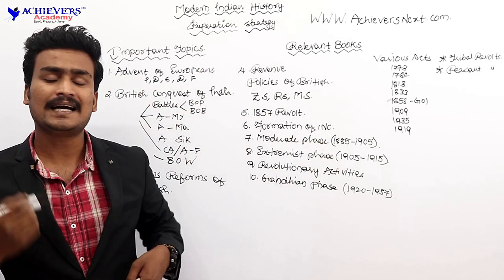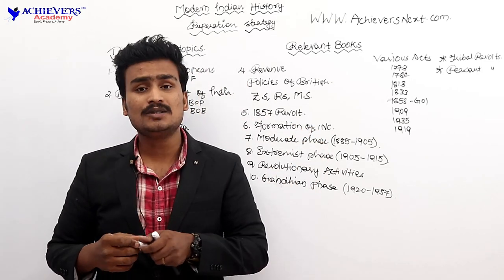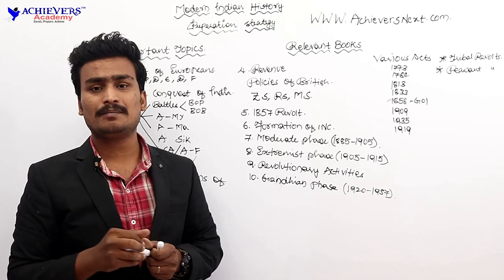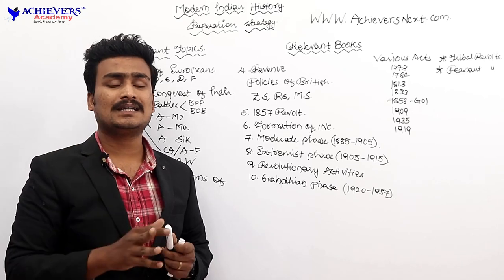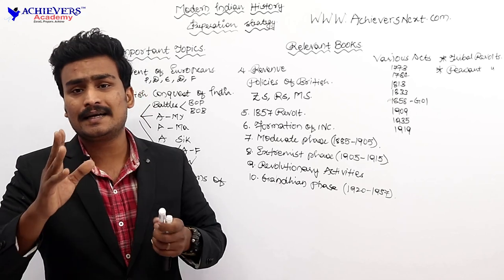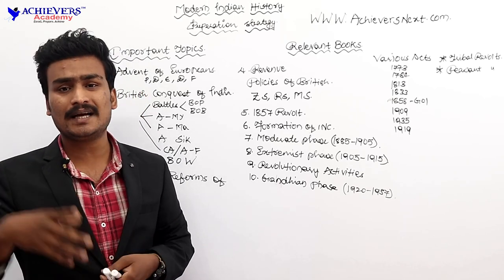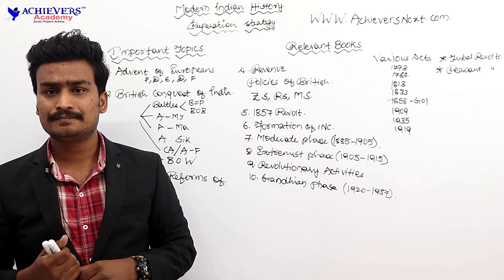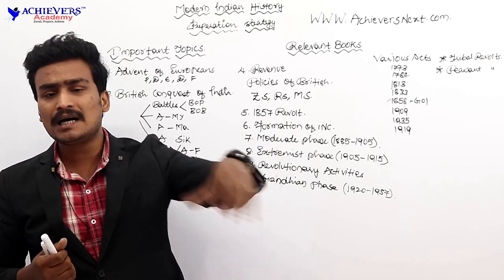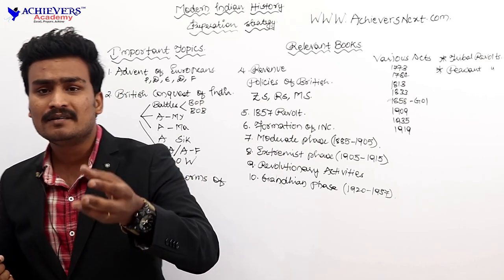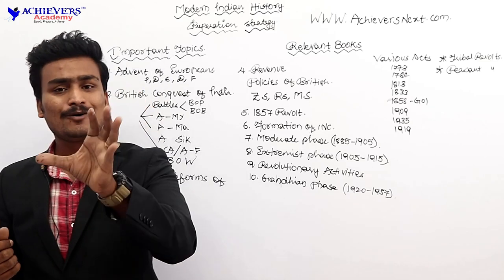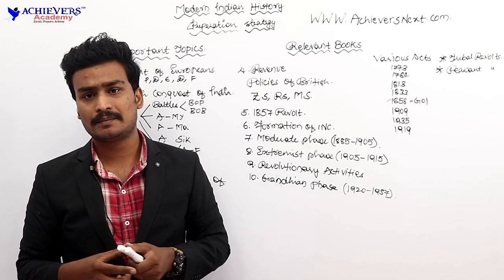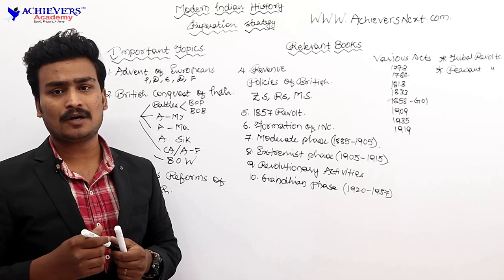After tribal revolts, we have Peasant Revolts. Under peasant revolts we also discuss revolts led by local rajas — for example, Uyyalawada Narasimha Reddy and Veeraapandiya Kattabomman. These local poligar revolts are also covered as part of this important topic.